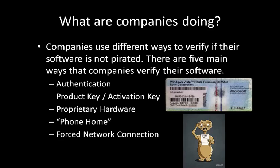Companies have five main ways they verify their software. The first is authentication — you'll notice this with iPhone phone number authentication, email authentication, and sometimes social security number authentication. The second is a product key or activation key; if you have a Windows computer, you can flip it over and see a product key sticker on the bottom which authenticates your Windows software with Microsoft. Third, companies sometimes use proprietary hardware such as singular cables, readers, and printers that will not allow software to run without the hardware attached to the system.